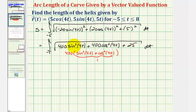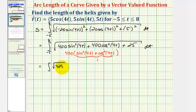So we'd have the square root of the quantity 400 plus 25, which is the square root of 425. This simplifies nicely to the integral of the square root of 425 with respect to t from negative five to eight.